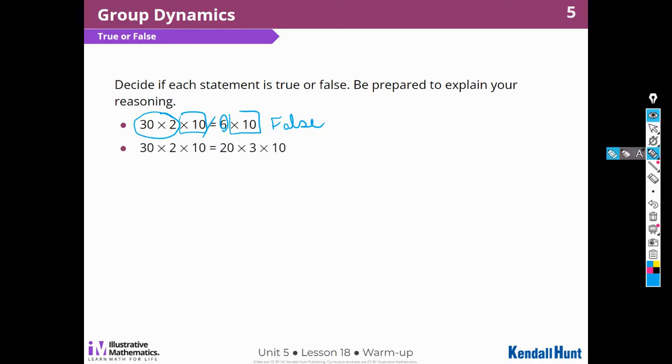30 times 2 times 10. I can see that the times 10 is the same. And then I have 30 times 2, which is going to be 60. And then I have 20 times 3, which is going to be 60. So yeah, this is going to equal out. I'm going to say that this one is true.